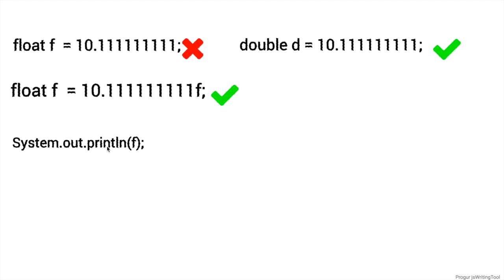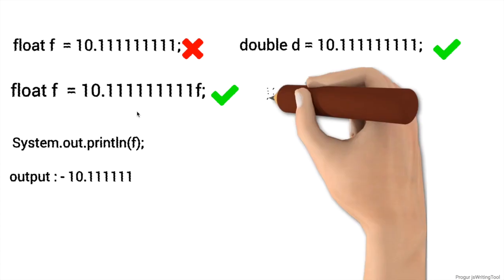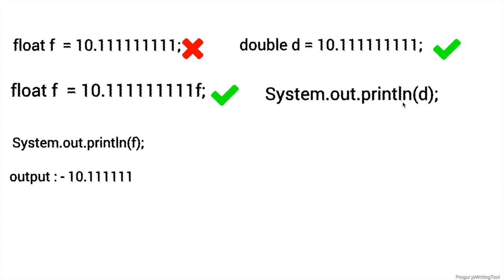Right now, let's focus on how a variable works. If I print the float variable f using System.out.println, the output is going to be 10.111111 — that's six ones after the decimal point, even though we put nine ones. And if we print the double variable d using System.out.println, we get 10.111111111 — all nine ones.